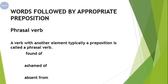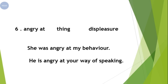For example, 'fond of' — 'fond' is your verb and 'of' is the preposition; together they form a phrasal verb. 'Ashamed of' — 'ashamed' is the verb and 'of' is the preposition. 'Absent from' — 'absent' is the verb and 'from' is the preposition. Now we will discuss our next five prepositions.